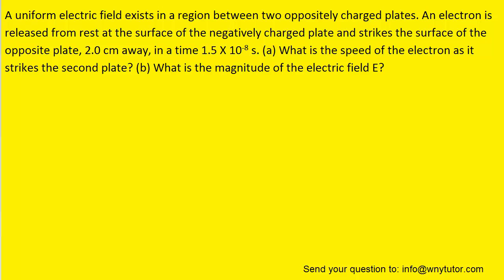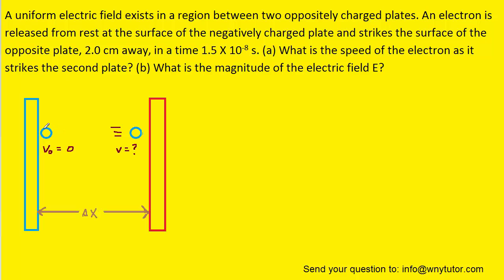We can begin to solve the question by drawing a picture of the situation being described. So here we have an electron that's being released from rest and that makes its initial velocity zero. We're trying to determine the final velocity after the electron has accelerated a displacement marked delta x.